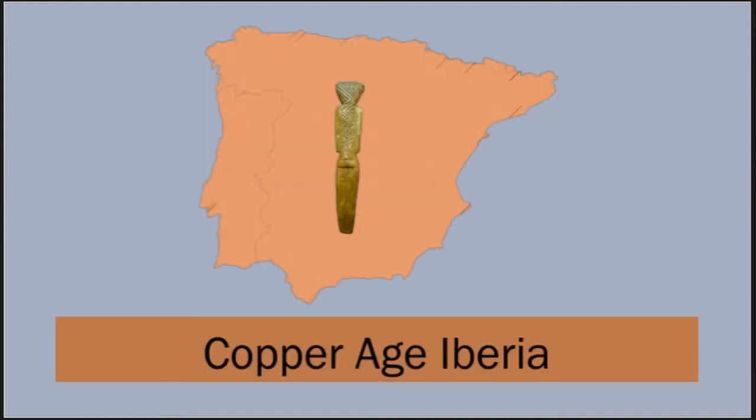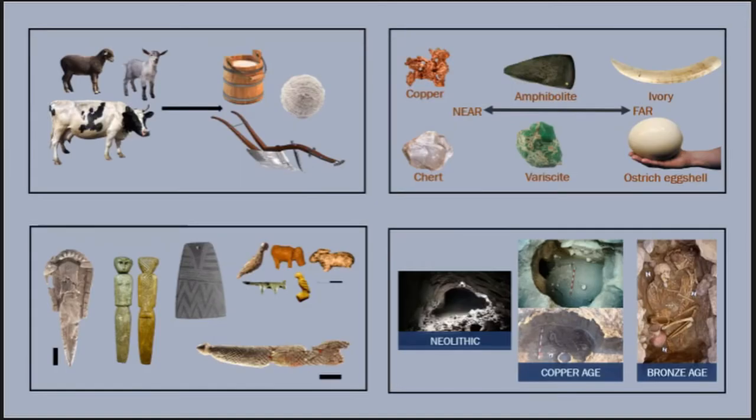I would argue that nowhere are these terminological ambiguities more pronounced than in late prehistoric Europe, particularly in Copper Age Iberia, a period which stretches from about 3200 to 2250 BC. There's a reason it's important to examine variability in this particular time and place, because the third millennium was a time of significant social transformation.